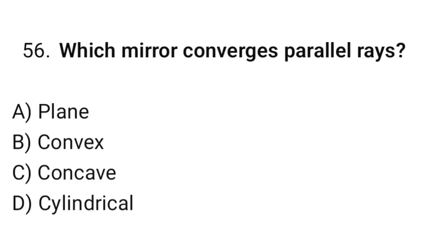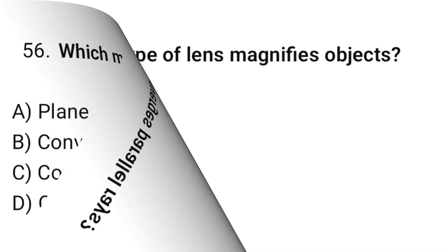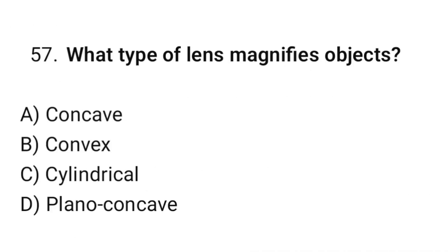Question number 56: Which mirror converges parallel rays? The correct option is C — Concave. Question number 57: Which type of lens magnifies objects? The correct option is B — Convex.